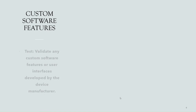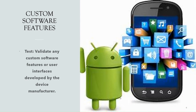We'll move on to our next test category: custom software features. These include test cases which validate any custom software features or user interfaces developed by the device manufacturer. As a device manufacturer, you would add customizations to make your Android device stand out. Those custom software features are validated under this category. If these custom software features have bugs or issues that affect the user experience, the manufacturer has to take responsibility and fix those issues.